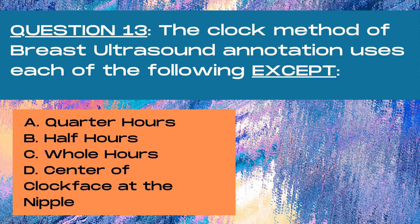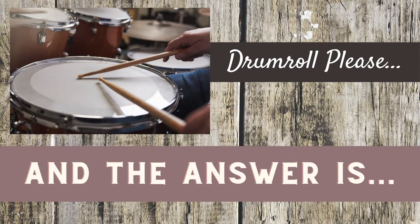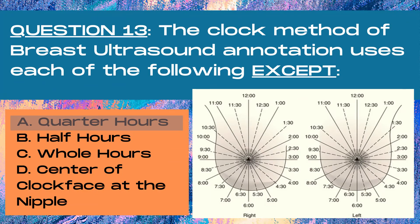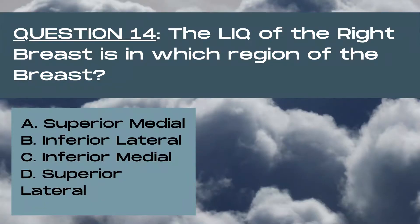Question 13. The clock method of breast ultrasound annotation uses each of the following except: A quarter hours, B half hours, C whole hours, or D center of clock face at the nipple? The answer is A, quarter hours. The clock method of breast ultrasound annotation uses whole hours and half hours with the center of the clock face positioned at the nipple. Quarter hours are not used for this type of annotation.